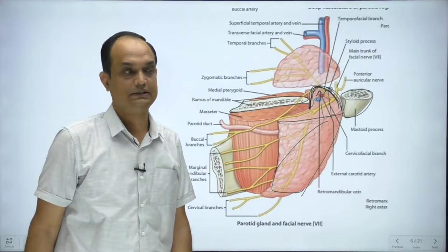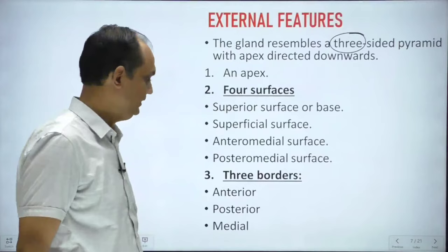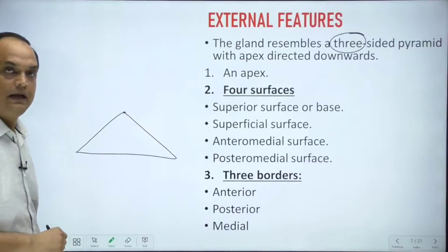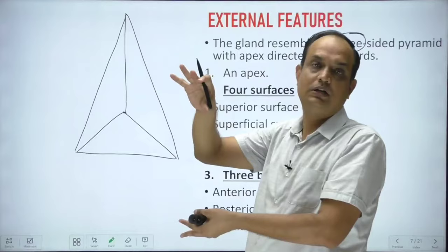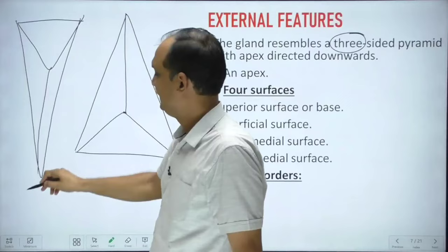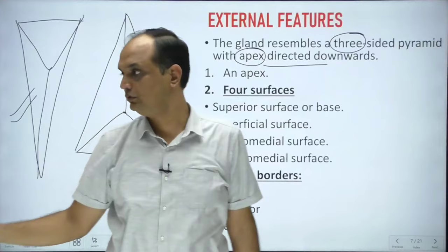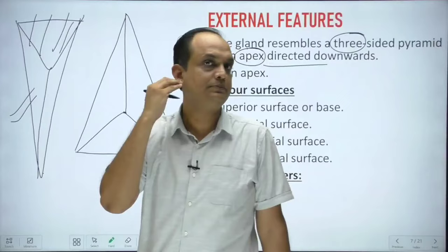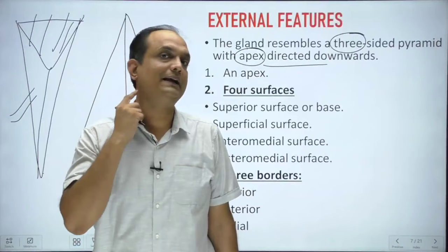When you see the external features, the parotid gland is a three-sided pyramid. If you invert this pyramid, the base goes up and the apex comes down — that is the shape of the parotid gland. The apex is directed downward and the base is on the superior part. The upper part of the parotid gland is known as the superior surface or base of the pyramid, while the apex projects downward into the upper part of the neck.